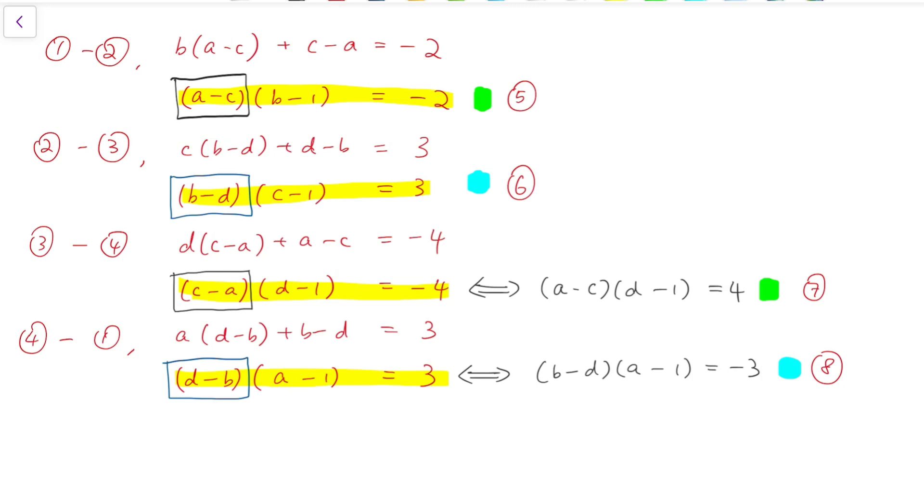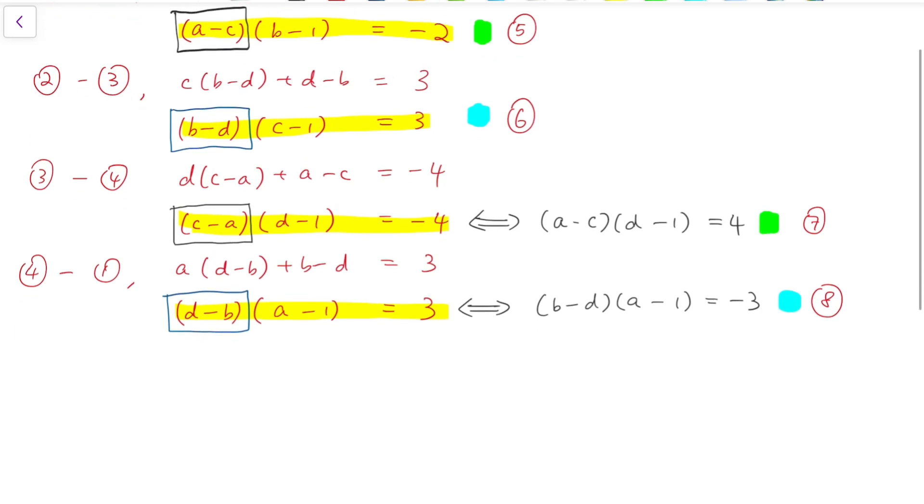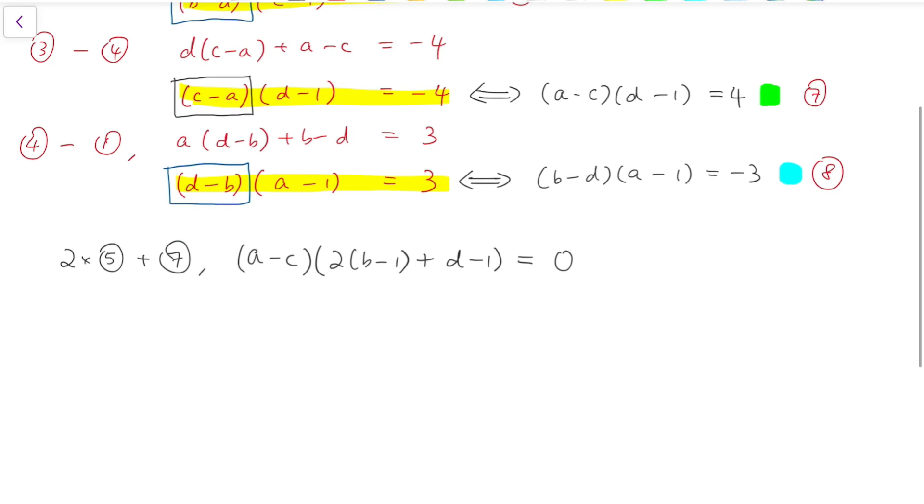For 5 and 7, I'm going to multiply the fifth equation by 2 and then add it with equation 7. So multiplying and adding, I can just copy the common factor a minus c and multiply by 2 times b minus 1 plus d minus 1. And the product should be 2 times minus 2 plus 4 and that's 0. So I have product equal to 0.